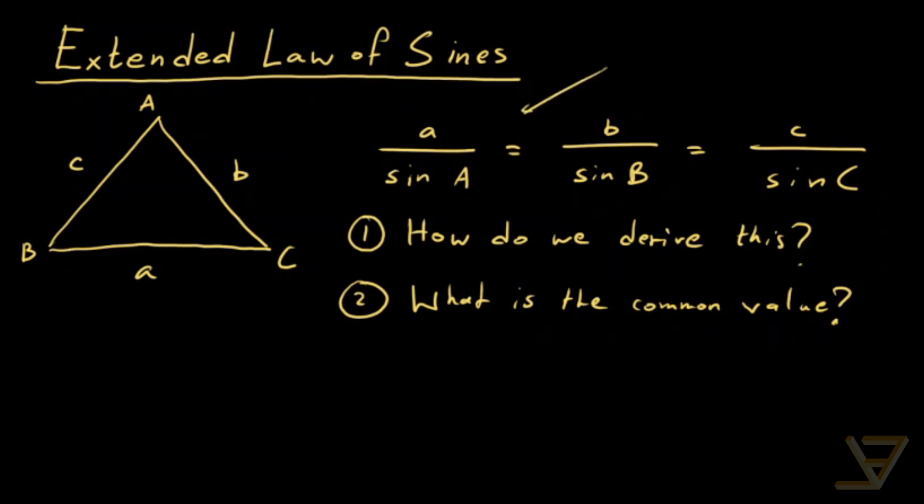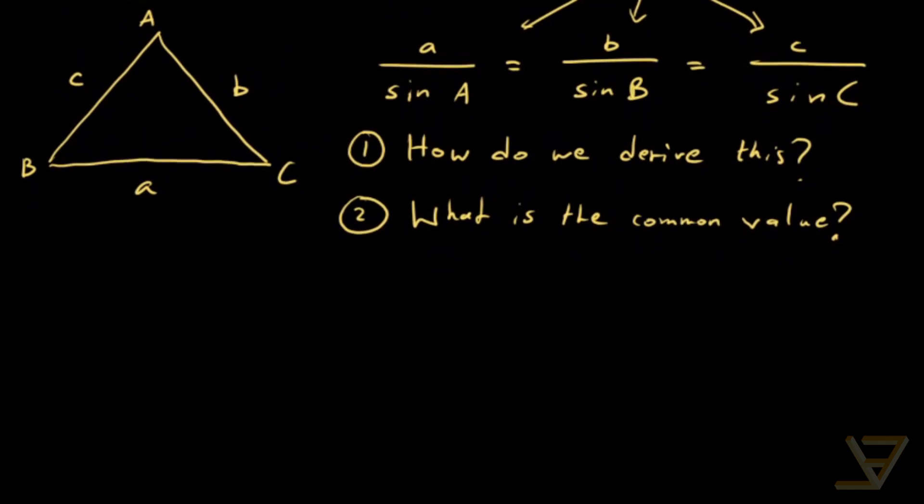We've got three values here: one, two, and three. And they have some sort of common value in terms of the side lengths A, B, and C. So we want to figure out what that is. And that's where the extended law of sines comes in because it answers both the first question and the second question.